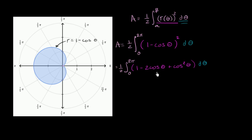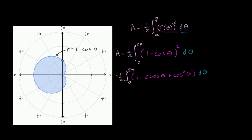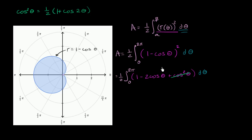I know how to take the antiderivative of 1 and of negative cos(θ). But cos²(θ) doesn't jump out at you for substitution. Luckily, we have our trigonometric identities. We know that cos²(θ) = ½(1 + cos(2θ)). This is one of the more useful trig identities when finding any type of antiderivative. So let's rewrite cos²(θ) as ½(1 + cos(2θ)).